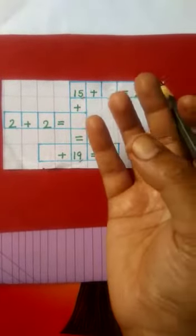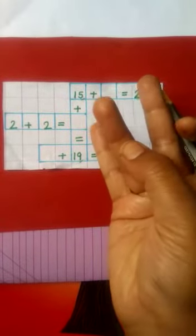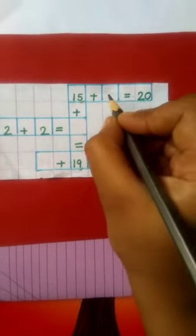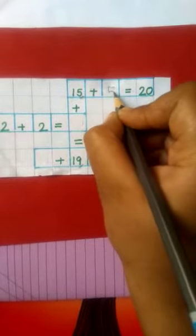So, we will start counting from 16. 16, 17, 18, 19, 20. How many are they? 1, 2, 3, 4, 5. So, we will write 5 here.